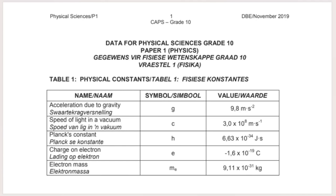First, I want to point out the data sheet for Physical Sciences Physics Paper 1, attached to the back of all your papers. This is what your data sheet looks like — it contains all the physical constants. Today we'll be using the speed of light in a vacuum, symbol c, which is 3×10⁸ m/s. We'll also use Planck's constant, the charge on an electron, and electron mass. Don't try to memorize these — find them at the back of your paper.